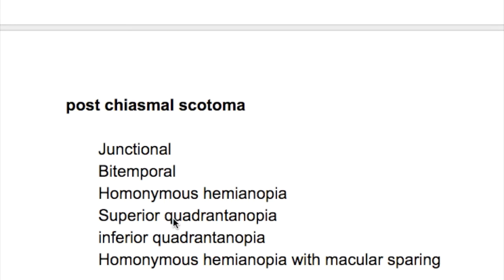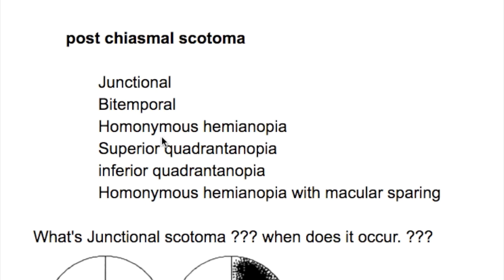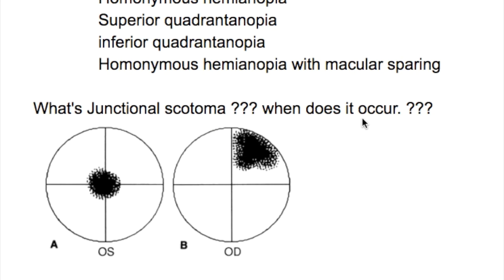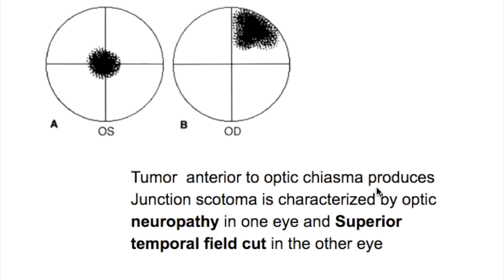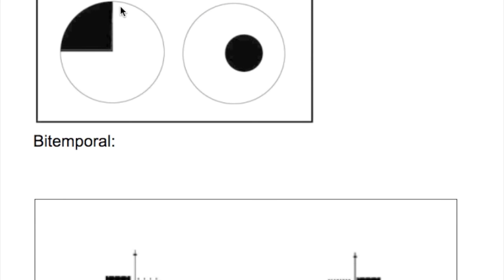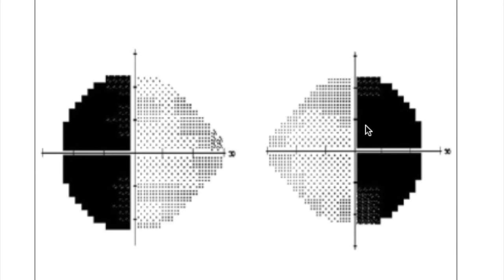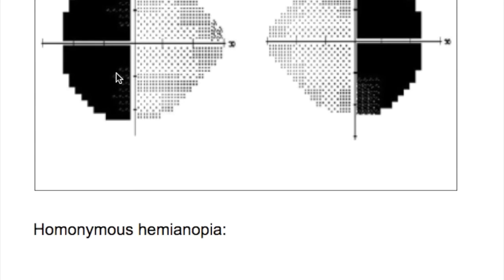Binocular scotomas are post-chiasmal and include junctional, bitemporal, and homonymous hemianopia, as well as superior and inferior quadrant hemianopia, and homonymous hemianopia with macular sparing. Tumors anterior to the optic chiasma produce junctional scotomas, characterized by optic neuropathy in one eye and a superior temporal field cut in the other eye. Bitemporal hemianopia affecting the temporal fields of both eyes occurs with optic chiasma lesions, usually tumors of the pituitary gland.